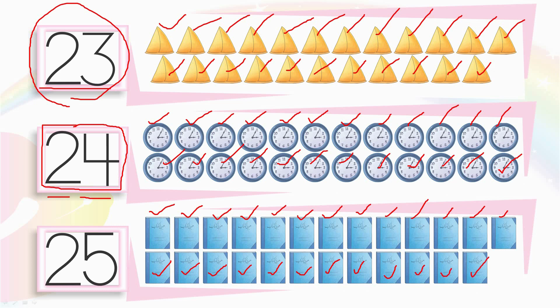Here is 25. Two tens and five ones make 25.